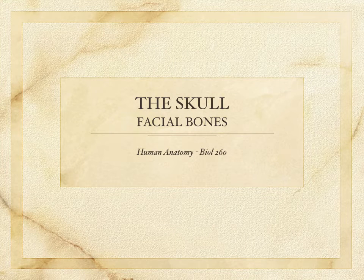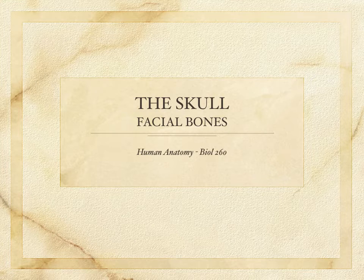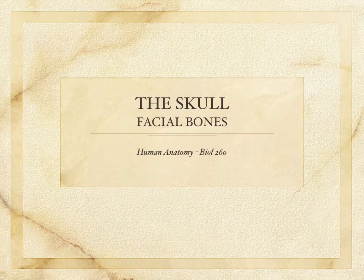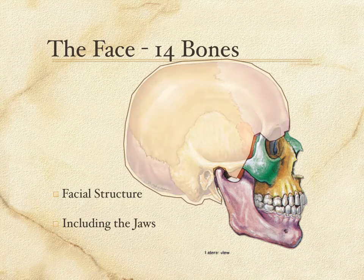Here is the second lecture in our exploration of the bones of the skull. In our introduction we showed that there were three groups of bones in the skull: the cranium with eight bones, the face with 14 bones, and six ossicles. In this lecture we're going to explore the 14 bones of the face.